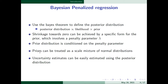These prior distributions can be treated as a scale mixture of normal distributions, which I will explain in later slides. One major advantage of Bayesian penalized regression over classical methods is that it is very difficult to quantify uncertainty of estimates classically, whereas using Bayesian penalization regression, uncertainty estimates can be obtained easily from the posterior distribution.